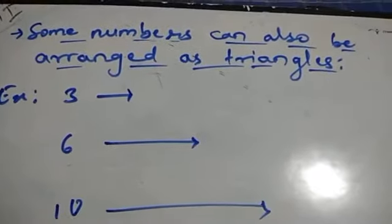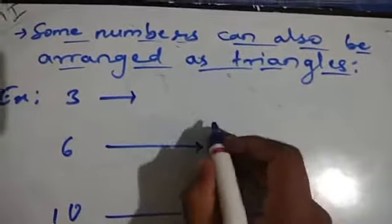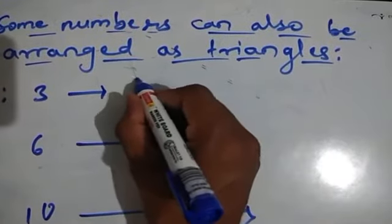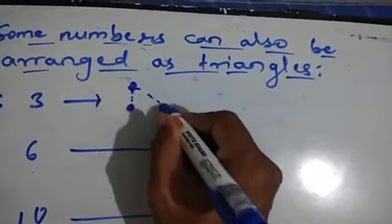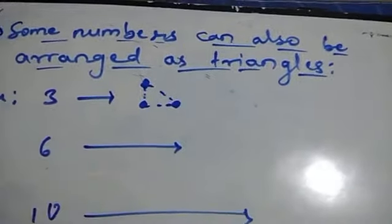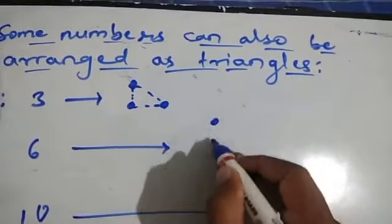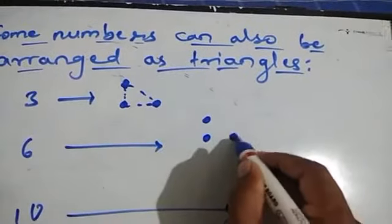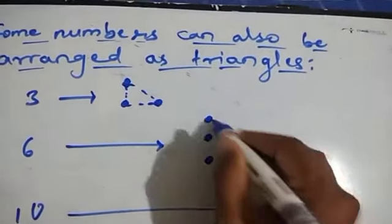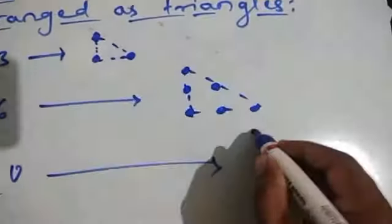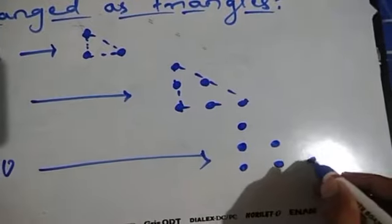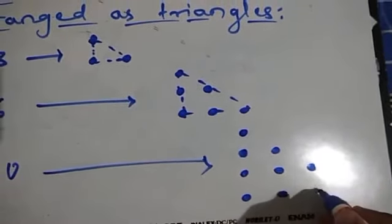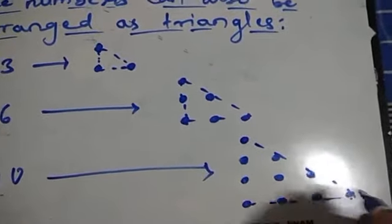Some numbers can also be arranged as a triangle. For example, 3 can be arranged as a triangle: 1 dot on top, then 2 dots below. Similarly, 6 can form a triangle: 1, 2, 3 in successive rows. And 10 also forms a triangle: 1, 2, 3, 4 dots in successive rows — giving a triangular arrangement.